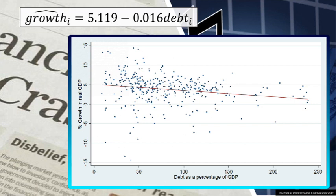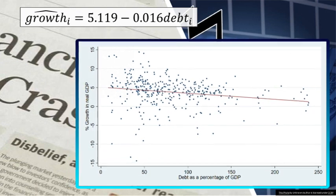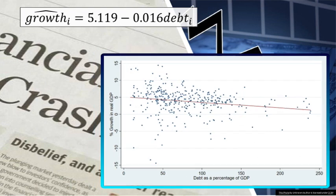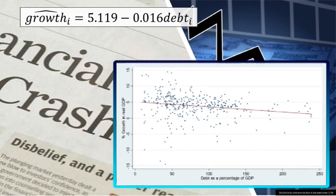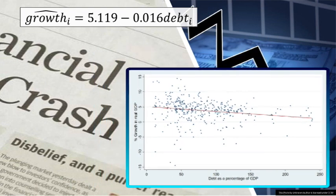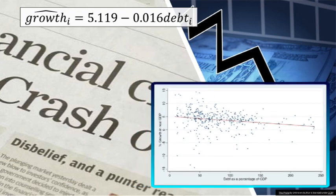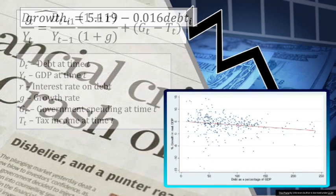The intercept — 5.119 — gives an estimate of the growth level of an economy if it had zero debt as a percentage of GDP. In other words, a country with zero debt is estimated to have a growth rate of 5.119%. However, there are no countries in our sample with zero percent debt, which suggests that we would be extrapolating outside of the sample.